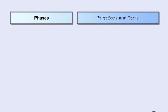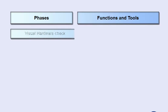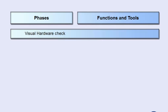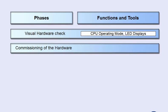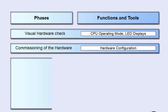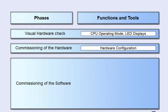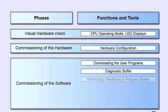The commissioning process can be divided into several activity phases in which various testing and commissioning functions are used. During the visual hardware check, completeness and installation of the automation devices are checked and subsequently switched on. The display elements on the modules give you the initial diagnostic information. While commissioning the hardware of the automation devices, it is mainly the parameters and wiring of the modules that are tested using the editor of hardware configuration. In the software commissioning phase, the functions of the user program are tested with the support of the SIMATIC manager.